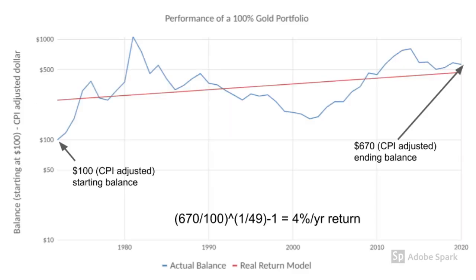Here's a plot of what a person would have experienced if he or she had bought $100 worth of gold in 1971 using CPI-adjusted cash. Over the 49-year time period, the balance would have grown to $670, again CPI-adjusted. Using a handy financial calculator, we can see that this is just a 4% per year rate of return — at least I'm guessing that's what the financial calculator would say, because I don't have one. I just use math.